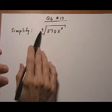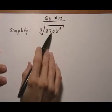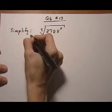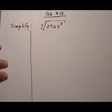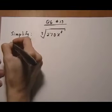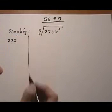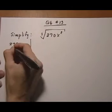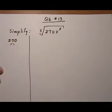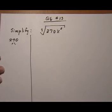So because we're dealing with a cube root, the first thing you want to do is take the number and let's make a workspace over here. Take the number 270 and break it down so that it's a product of two numbers, one of which is the highest possible cube root you could have.